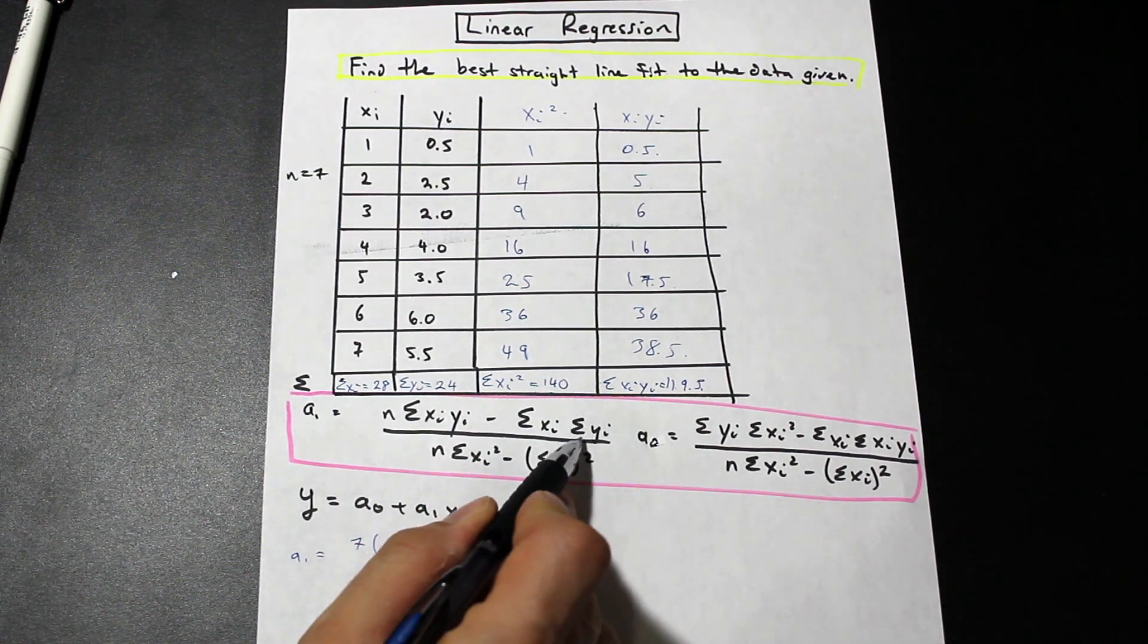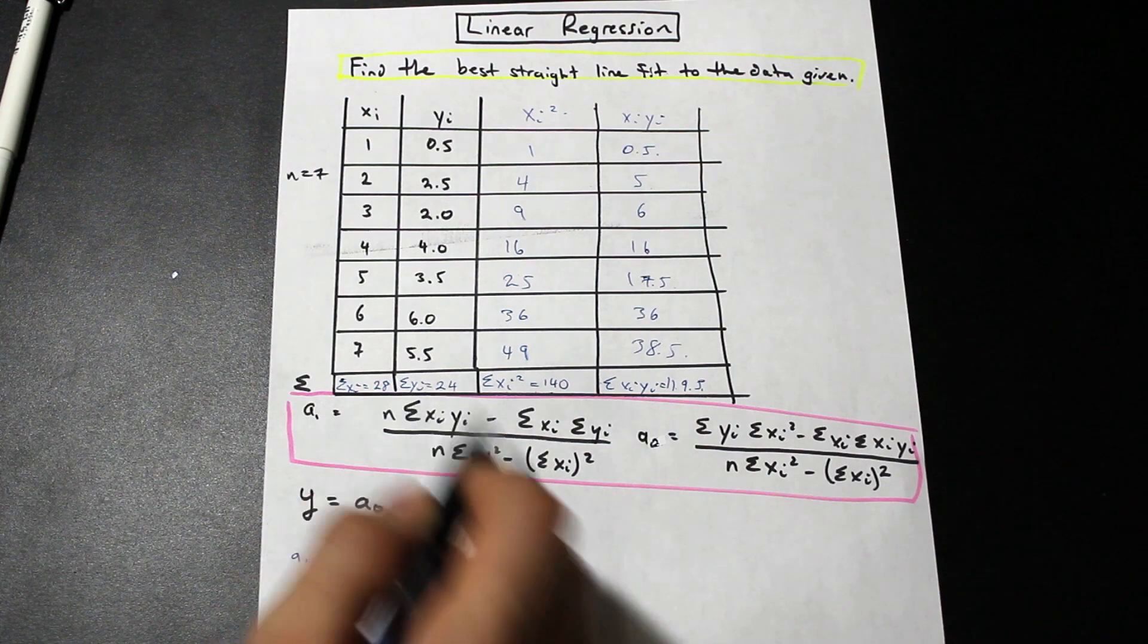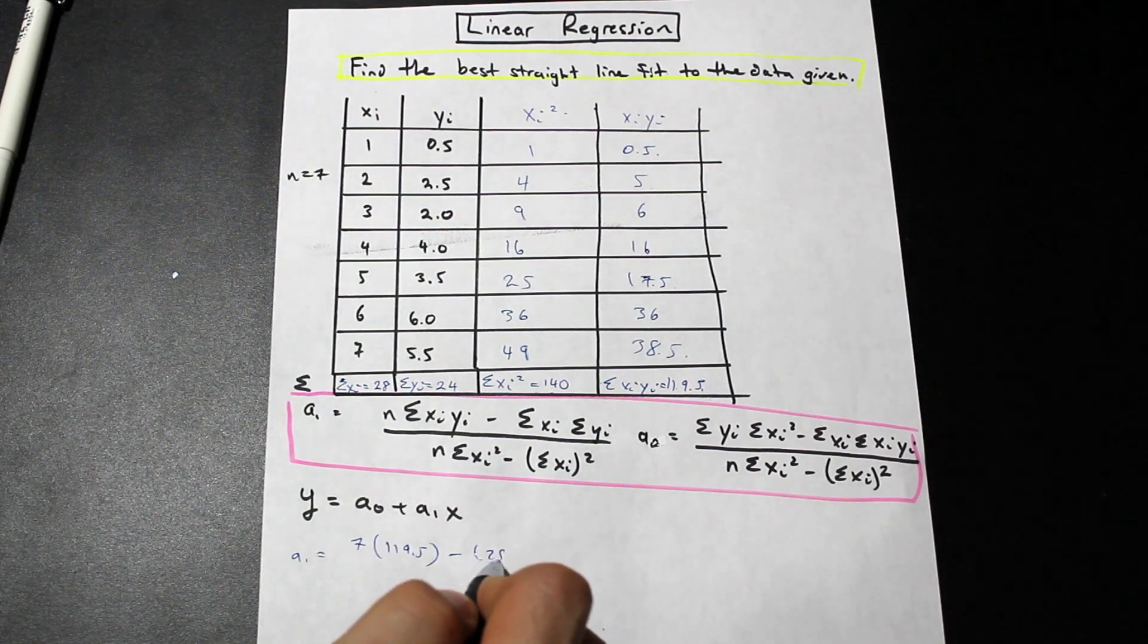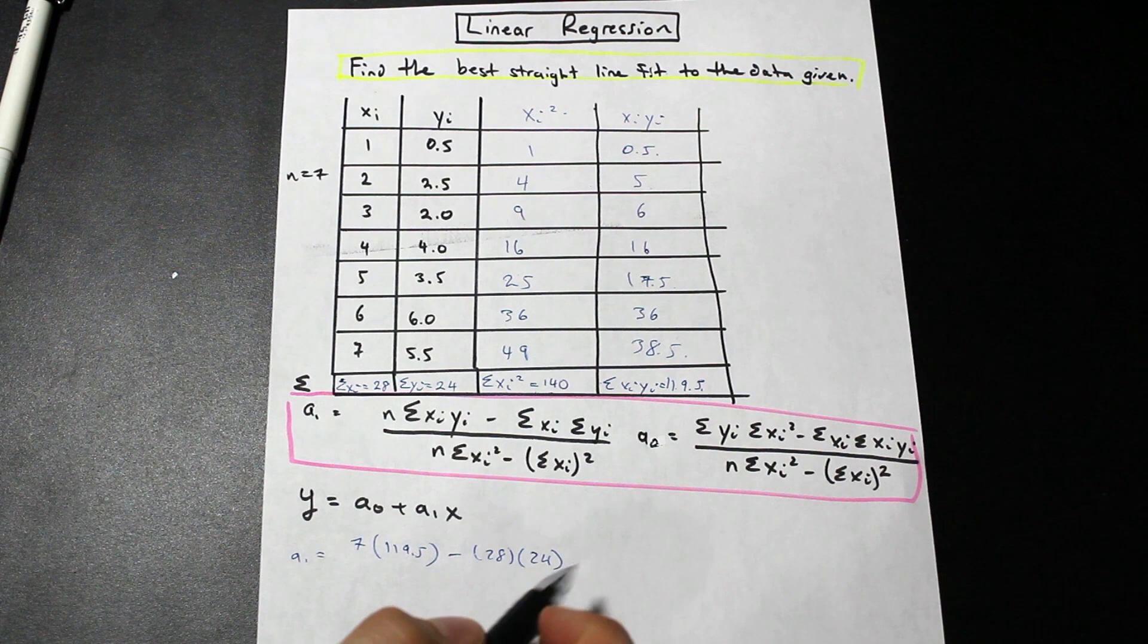What else do we have here? We're going to have to subtract the summation of xi times the summation of yi. So we have 28 times 24, like this. Very good.